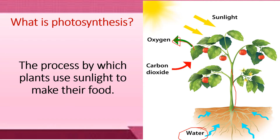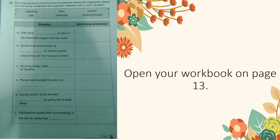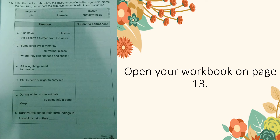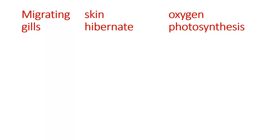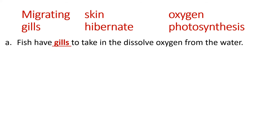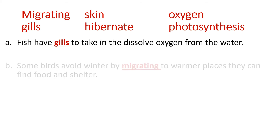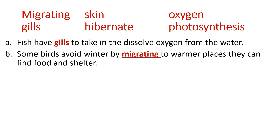Now let's have your activity. Please open your workbook on page 13, number 14. What you are going to do is choose the correct word to fill in the following sentences. For letter A: fish have gills — as I showed you, gills is where they take in the dissolved oxygen from the water, so without their gills they cannot breathe or survive.